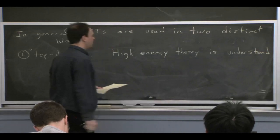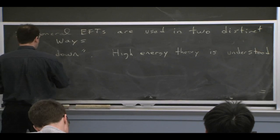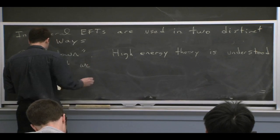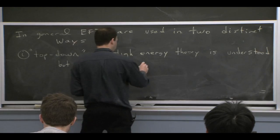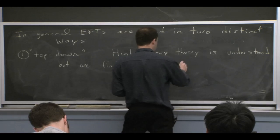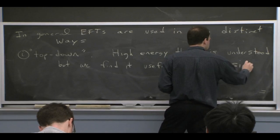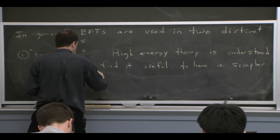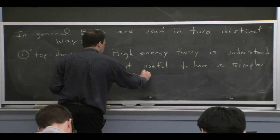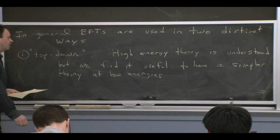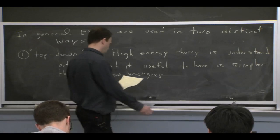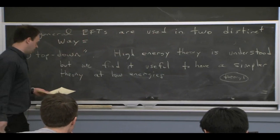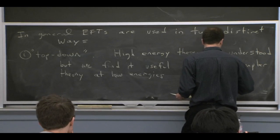In this top-down case, we have a high energy theory — say the standard model — and that theory is understood in the sense that we can write down the Lagrangian for it. But we're not satisfied with that. We find it useful to have a simpler theory, where we have some Theory 1, which is this high energy theory, that we understand and can do calculations in.